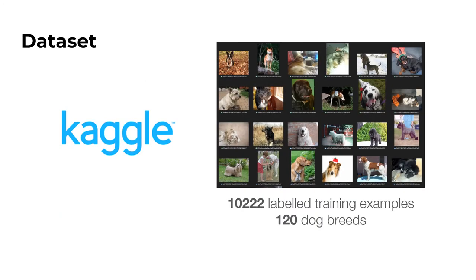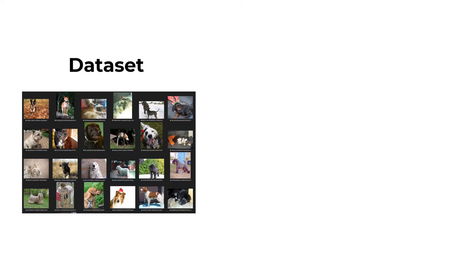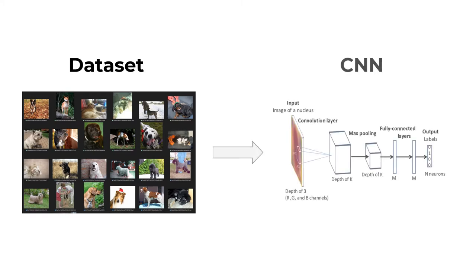We have acquired our dataset from Kaggle which contains over 10,000 labeled training examples of 120 different dog breeds. We then use this dataset to train our CNN model so that it can classify new images of dogs to their correct breeds.